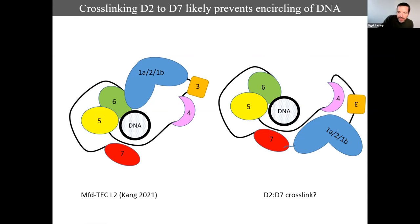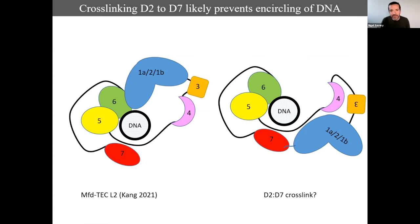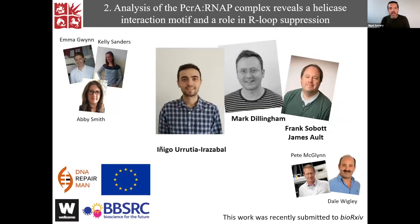Essentially, we need the eighth cryo-EM structure — seven is very impressive — to show us what the translocating intermediate looks like.